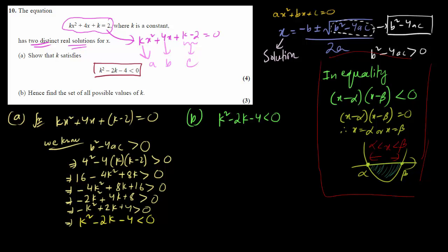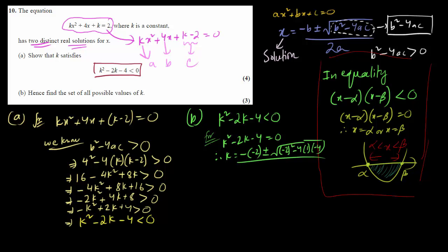The problem here is we cannot factorize by middle term break - 4 minus 1 gives 3, we cannot get 2. So for finding the critical values, we use the quadratic formula. Setting k squared minus 2k minus 4 equals to 0, we write k equals minus b plus or minus root over b squared minus 4ac divided by twice a. This turns out to be 2 plus or minus root over 4 plus 16 divided by 2, which is 2 plus or minus square root of 20 divided by 2.